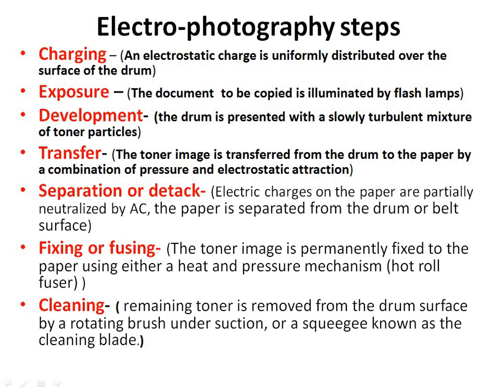Electrophotography steps: An electrostatic charge is uniformly distributed over the surface of the drum. Exposure: The document to be copied is illuminated by flash lamps. Development: The drum is presented with a slowly turbulent mixture of toner particles. Transfer: The toner image is transferred from the drum to the paper by a combination of pressure and electrostatic attraction. Separation: Electric charges on the paper are partially neutralized by AC, and the paper is separated from the drum. Fixing or fusing: The toner image is permanently fixed to the paper using a heat and pressure mechanism — hot roll fuser. Cleaning: Remaining toner is removed from the drum surface by a rotating brush under suction, or a squeegee known as the cleaning blade.